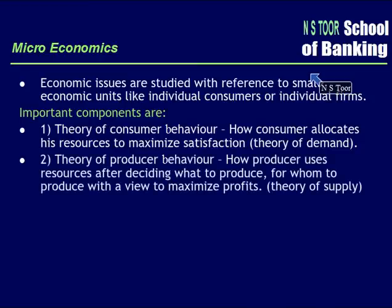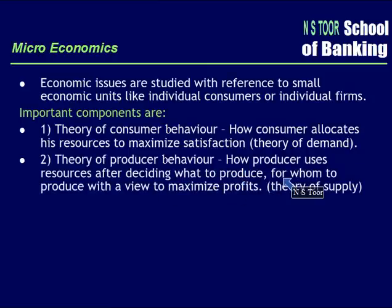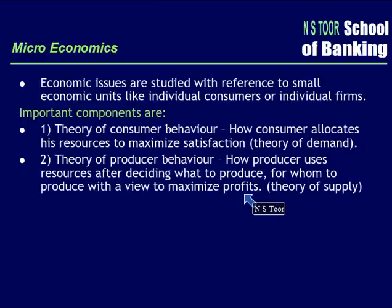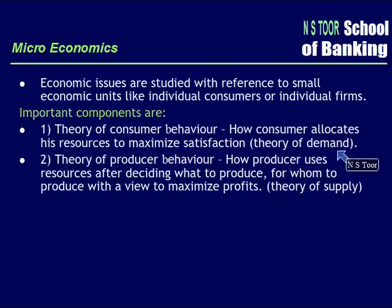The second component is the theory of producer behavior — how the producer uses resources after deciding what to produce and for whom to produce, with a view to maximize profit. This is studied under the theory of supply.